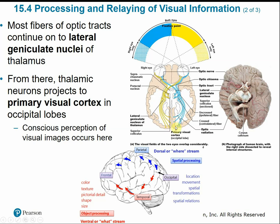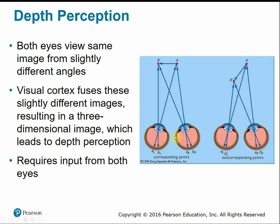In the visual cortex, conscious perception of visual images begins. We determine the location of objects, whether they're moving — the spatial processing part. The ventral stream looks at what an object is: shape, size, and color. Depth perception requires input from both eyes, since each eye views the same image from slightly different angles. The visual cortex fuses these two slightly different images together to give us a three-dimensional image and depth perception.